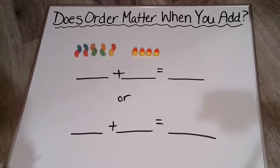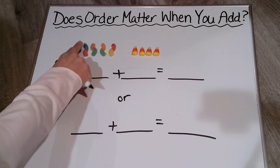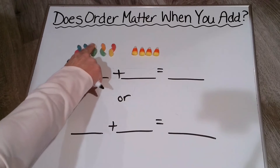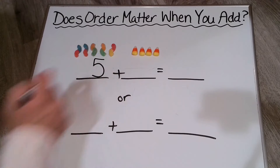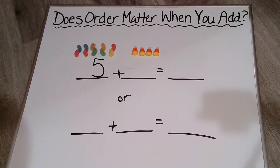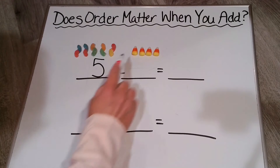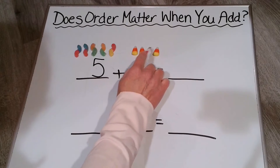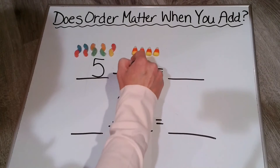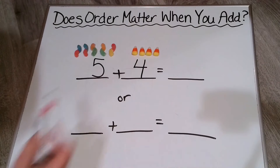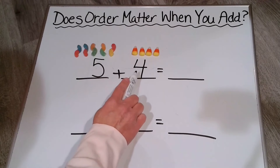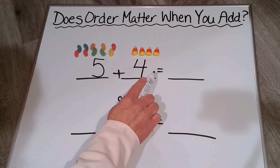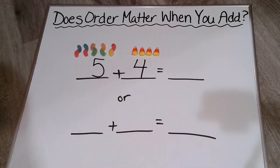So my first addend is going to be 1, 2, 3, 4, 5, and my second addend is going to be 1, 2, 3, 4. So as you can see, it's 5 plus 4 equals, and I've got to figure out what my sum is going to be.